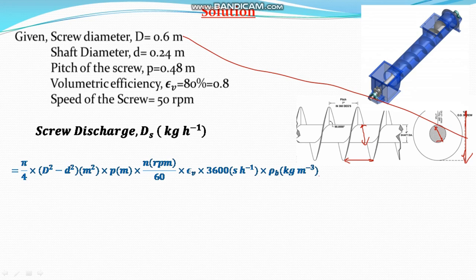If you see this is the area cross sectional area is equal to pi by 4 (D squared minus d squared). Capital D is the diameter of the screw and small d is the diameter of the shaft.